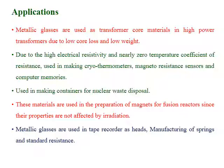Metallic glasses are used as transformer core materials in high-power transformers due to their low core loss and low weight. Due to their high electrical resistivity and nearly zero temperature coefficient of resistance, they are used to make cryo-thermometers, magnetoresistant sensors, and computer memories. They are also useful for producing containers for nuclear waste disposal and in the preparation of magnets for fusion reactors, since they are not affected by radiation. Additionally, they are used in the manufacture of springs and standard resistances for laboratory purposes.